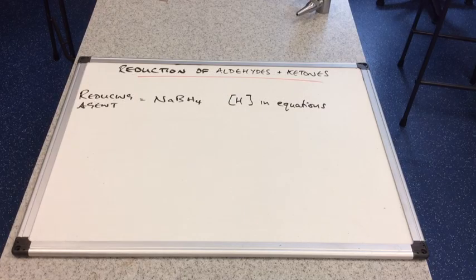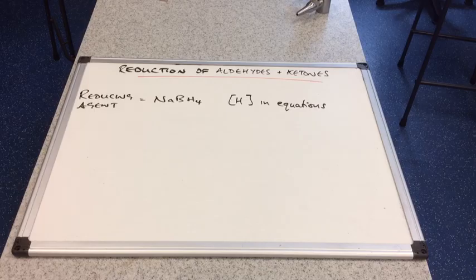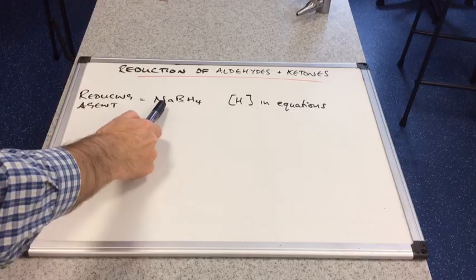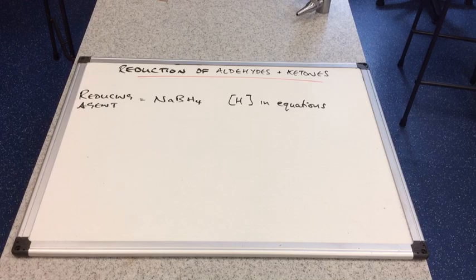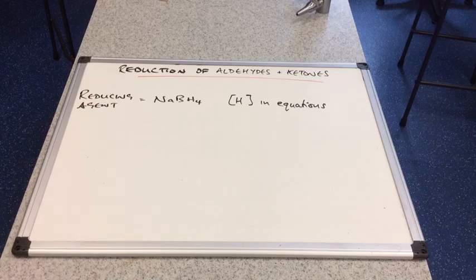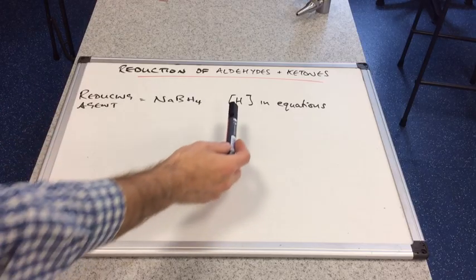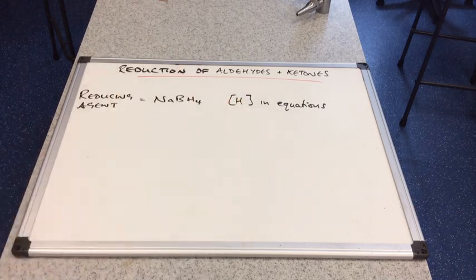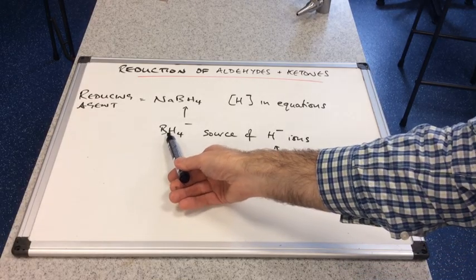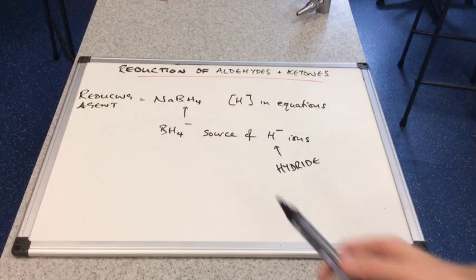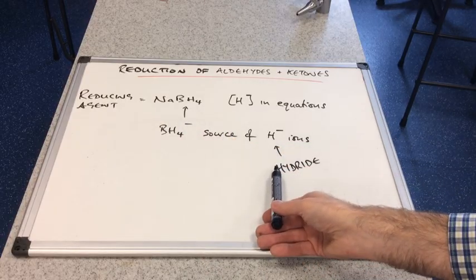We're now going to look at the reduction of aldehydes and ketones. So we need to point out straight away what the reducing agent is. So the chemical formula for the reducing agent is NaBH4. Its name is sodium tetrahydroborate(III). NaBH4. Now, in equations, just like we could use the O in square brackets for the oxidizing agent, we use H in square brackets to represent the reducing agent. So you can see the reducing agent contains this BH4- ion. And that is a source of hydride ions, H- ions.